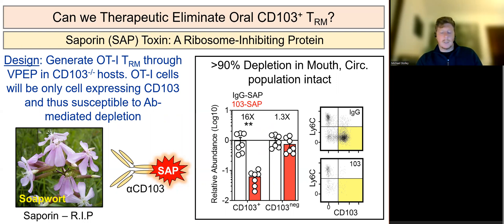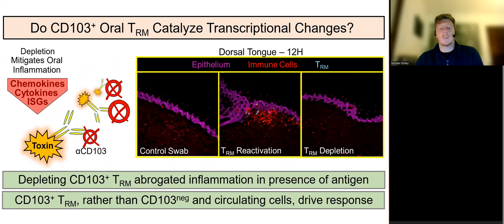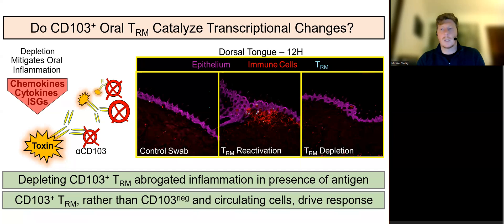Employing this novel depletion system, which obviates off-target effects, we were able to demonstrate that CD103-expressing oral TRM, rather than their CD103-negative or circulating memory counterparts, were the critical catalysts of oral inflammation and transcriptional changes upon cognate antigen re-exposure in the oral mucosa.